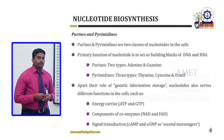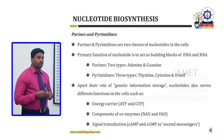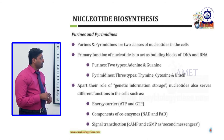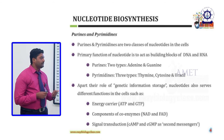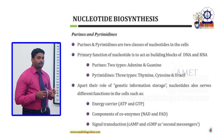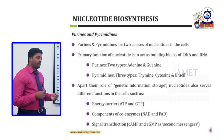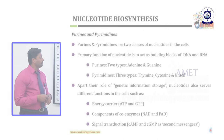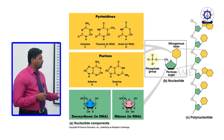To understand the functions of nucleotides, we need to understand nucleotide biosynthesis. Purines and pyrimidines are the two classes of nucleotides in cells. The primary functions of nucleotides are acting as building blocks of DNA and RNA. Purines consist of two types: adenine and guanine. Pyrimidines consist of three types: thymine, cytosine and uracil. Apart from genetic information storage, nucleotides also serve as energy carriers, components of coenzymes, and signal transducers from one molecule to another.